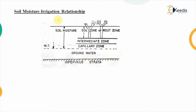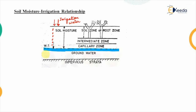When we supply the irrigation water, the cross-section shown is related to a field and this is the irrigation water that has been supplied. Now out of that irrigation water, some part will drain under the action of gravity, and there is a natural water table available below the ground level. The water present below this level is known as the groundwater level.